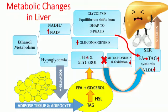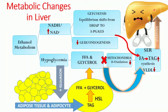The free fatty acids and glycerol will now go to the smooth endoplasmic reticulum. The 3-phosphoglycerate from glycolysis is converted to glycerol and also reaches the smooth endoplasmic reticulum, where it reacts with fatty acids to form triacylglycerol. Due to decreased VLDL formation, this triacylglycerol remains in the liver itself, causing steatosis — fat droplets seen within the hepatocytes. This is the whole mechanism of metabolic changes in the liver.